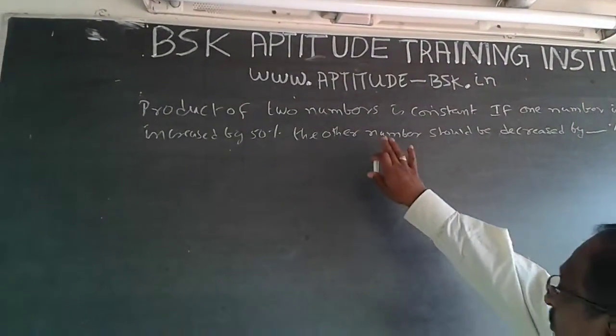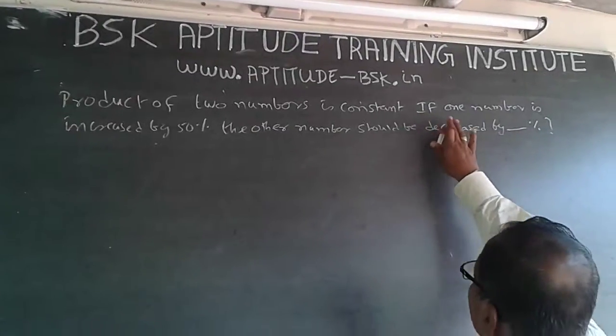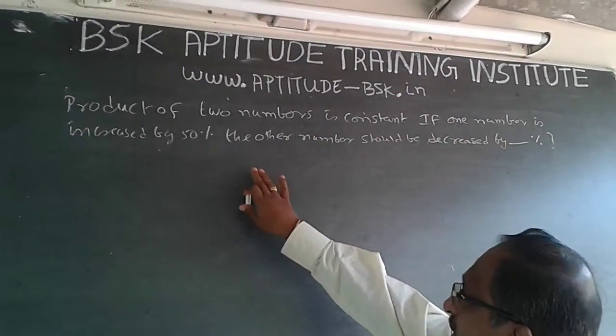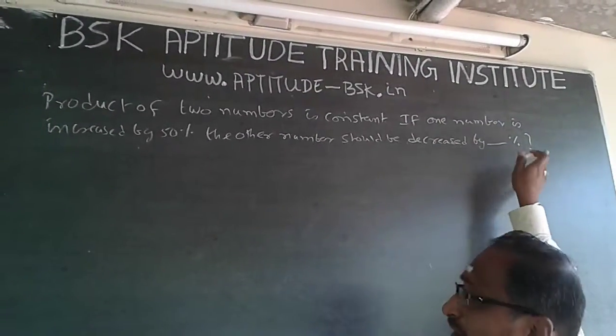The question is: the product of two numbers is constant. If one number is increased by 50%, the other number should be decreased by what percentage?